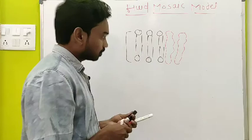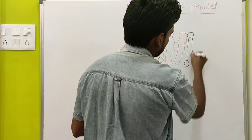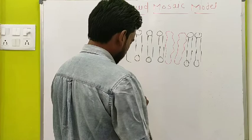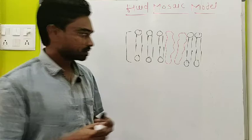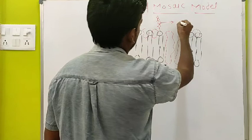Some are integral proteins. Some of the integral proteins act as transmembrane proteins. And along with that, some special type of proteins are there — they are called peripheral proteins. Some glycoproteins are also present.